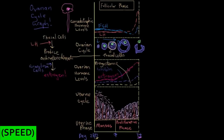As the follicles grow, the estrogen level just keeps going way up, and you can see that reflected in the graph. Looking at what's happening in the endometrium of the uterus — the inner lining — we can see we're in the proliferative phase. It's called the proliferative phase because the increasing estrogen levels are inducing a new layer of endometrium to form, since the old one was shed during menstruation in the previous week.